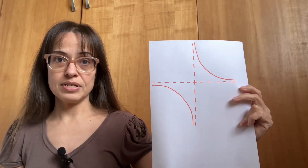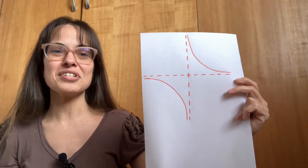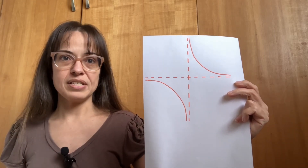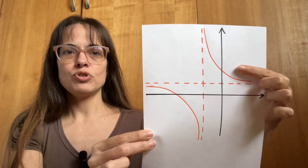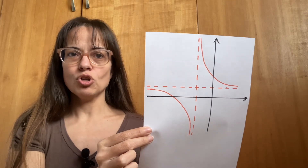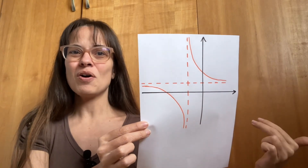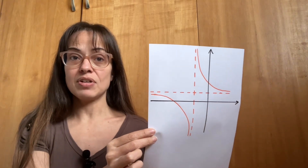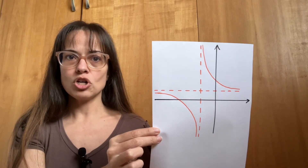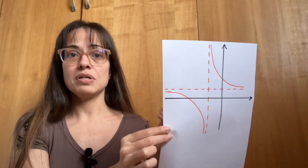Rational functions look like this — they have a shape with one piece on one side and a different piece on the other side. They always have a vertical asymptote and a horizontal asymptote. Most of the time they also have a y-intercept and an x-intercept, though sometimes one of those is missing if an asymptote lines up with a coordinate axis. In general, there are four relevant features: a horizontal asymptote, a vertical asymptote, an x-intercept, and a y-intercept.